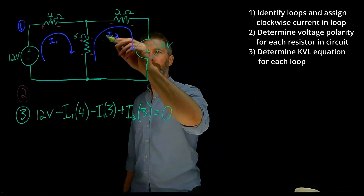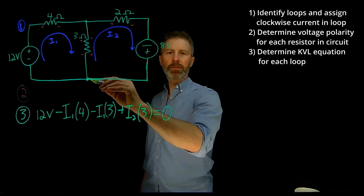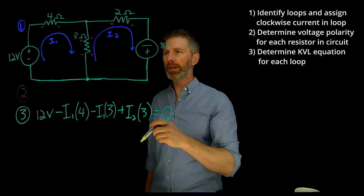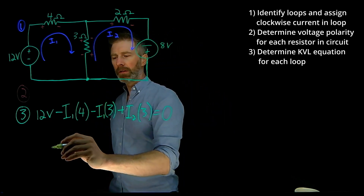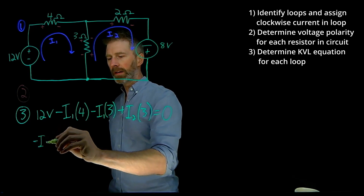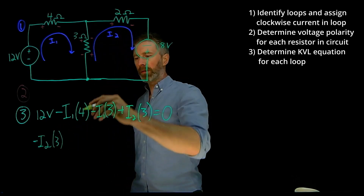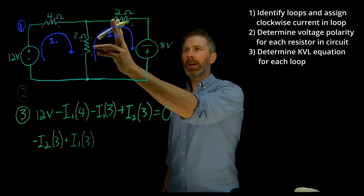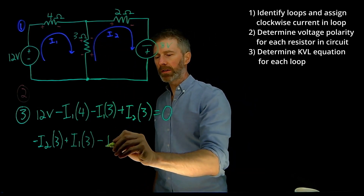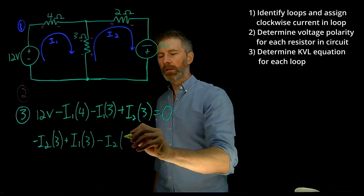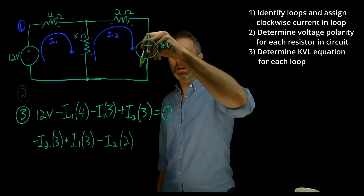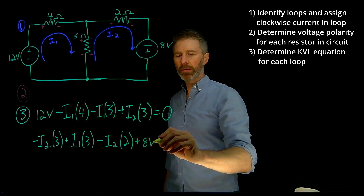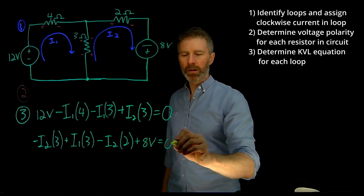For the second loop, starting at our reference point: the shared 3 ohm resistor gives a drop of minus I2 times 3 and a rise of I1 times 3 ohms for the opposing current. Then we have a drop across the 2 ohm resistor of minus I2 times 2 ohms, and a rise of plus 8 volts from the voltage source. Back at the start, the sum of all these voltages should equal zero.